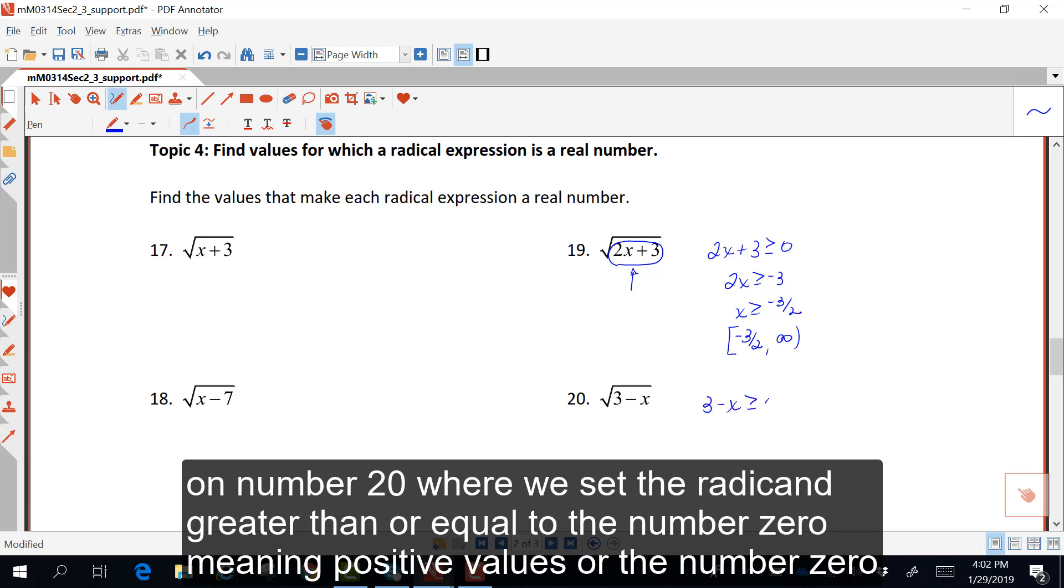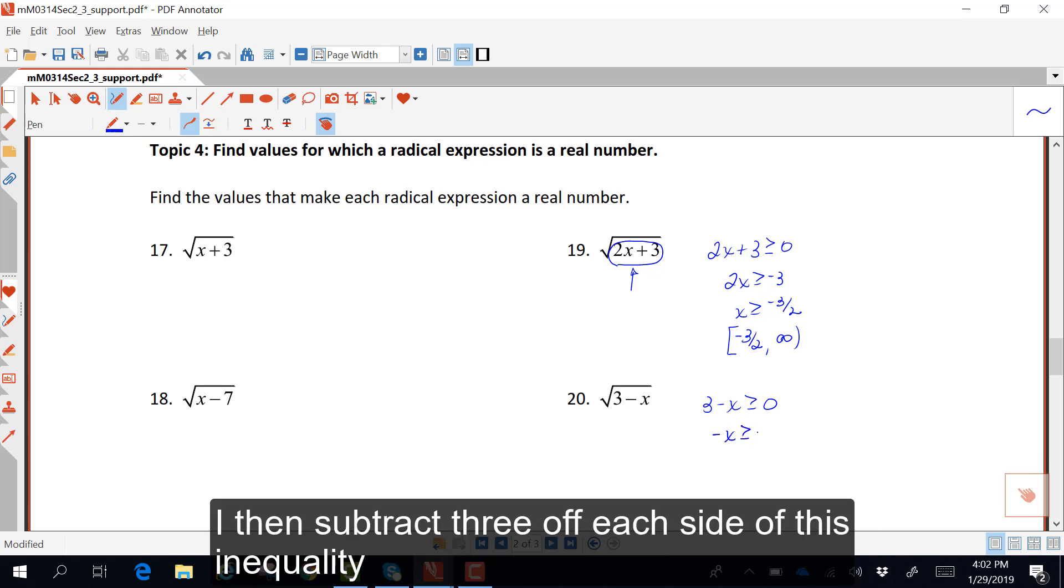We can also do this same process on number 20, where we set the radicand greater than or equal to 0, meaning positive values or the number 0. I then subtract 3 off each side of this inequality.